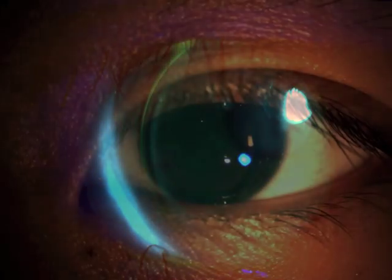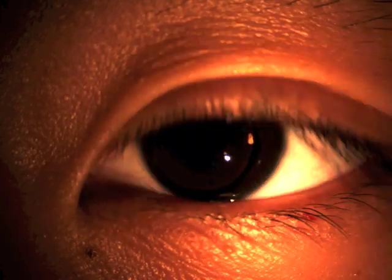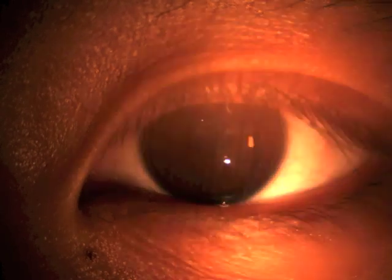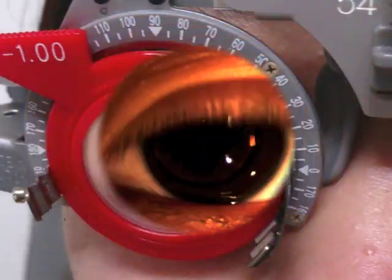For a steep-fit RGP lens, you'll observe central pooling with peripheral bearing, meaning that the lens is actually touching the cornea on the periphery without any fluorescein. Edge clearance-wise, for a steep-fit RGP, you'll observe about 0.3 to 0.5mm of edge clearance. Sometimes it may not be even all around, depending on individual fit. Movement-wise, for a steep fit, you may observe about 1 to 1.5mm of vertical movement.